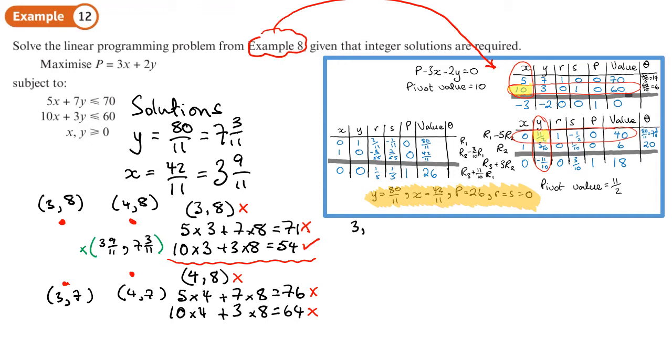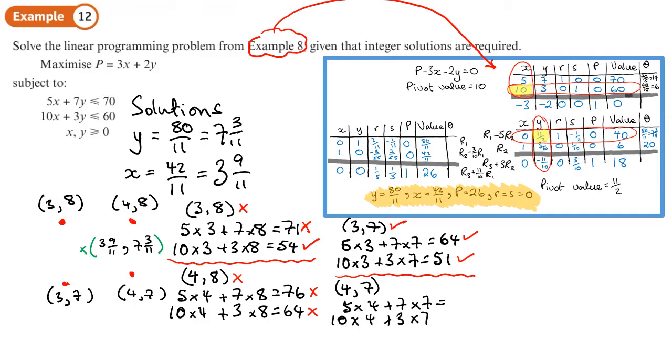We'll move on to the next one, which is (3, 7). So 5 times 3 plus 7 times 7, and then 10 times 3 plus 3 times 7. We get 64 and 51. Both constraints are satisfied, so this is a pair of values we're going to try. The last one we're going to look at is the coordinate (4, 7). So 5 times 4 plus 7 times 7 gives 69, and 10 times 4 plus 3 times 7 gives 61. This top constraint is satisfied, but the bottom one isn't because this is more than 60.